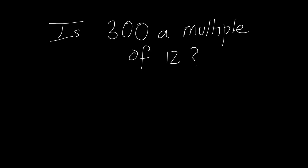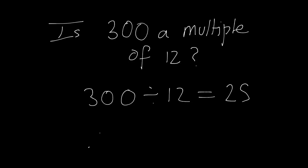How do we work out whether 300 is a multiple of 12? In this particular example, what we first need to do is divide 300 by 12. If 12 goes exactly into 300 with no remainder, that means 300 is indeed a multiple of 12. If you do this on your calculator, you should get 25. Therefore the answer is yes — it is a multiple of 12.